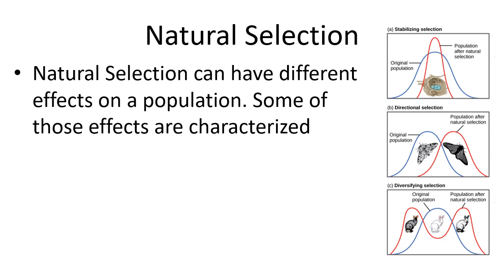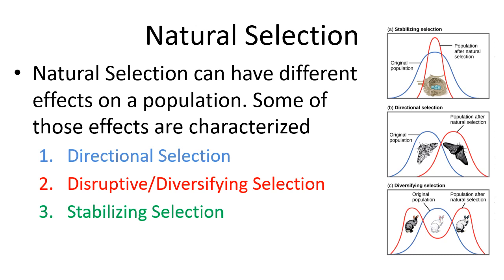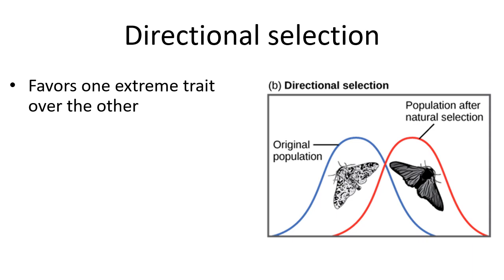We can characterize different types of natural selection by how traits change over time. Three types we'll discuss are directional selection, disruptive or diversifying selection, and stabilizing selection.